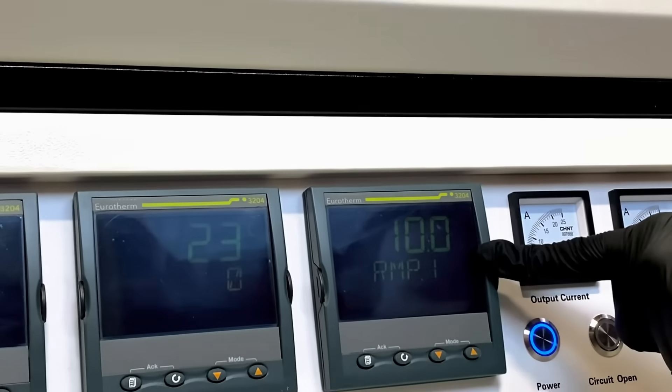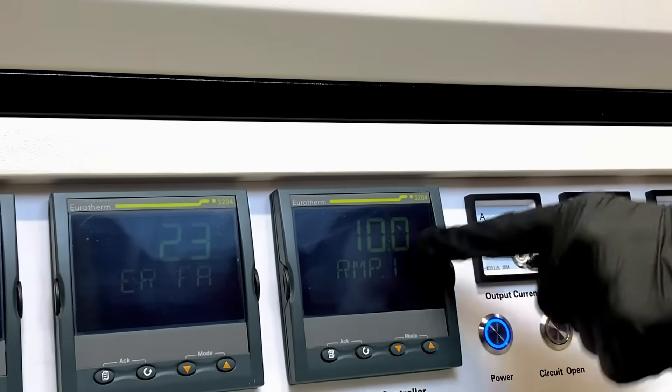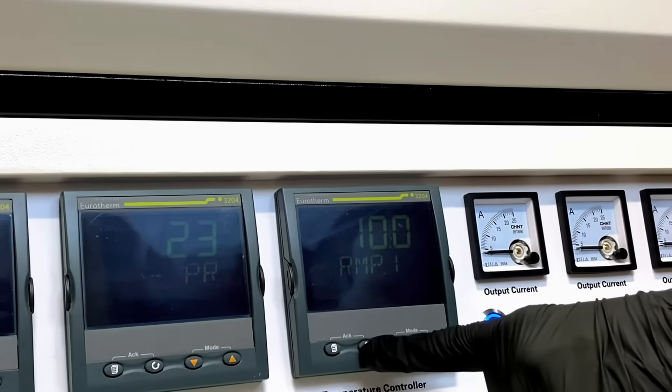And then, above 1,200 Celsius, we reduce our recommended ramp rate to 5 degrees Celsius per minute. Right now, we will set 10 degrees Celsius per minute and press the cycle button.